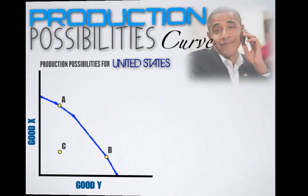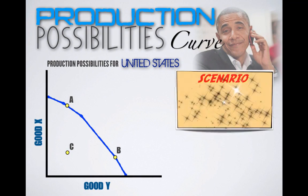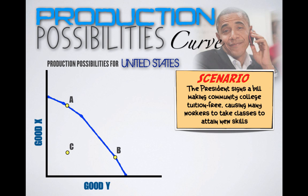For the United States: the President signs a bill making community college tuition free, causing many workers to take classes and attain new skills. With cheaper education, a larger percentage of the workforce will become more productive. With a more productive workforce, the United States will be able to produce more goods and services, and its PPC will shift outward.